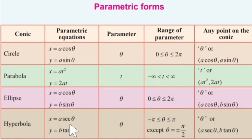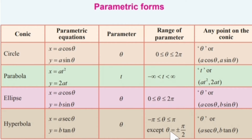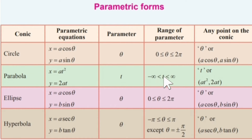Likewise, for the hyperbola, x equal to a sec theta and y equal to b tan theta. Here the parameter is theta, and theta lies between minus pi to plus pi, except theta equal to plus or minus 90 degrees, because at those values it becomes infinity. Any point on the hyperbola is of the form a sec theta, b tan theta. For a circle and ellipse, theta ranges from 0 to 2 pi. For hyperbola, theta ranges from minus pi to plus pi, except plus or minus pi by 2. For parabola, parameter t ranges from minus infinity to plus infinity.